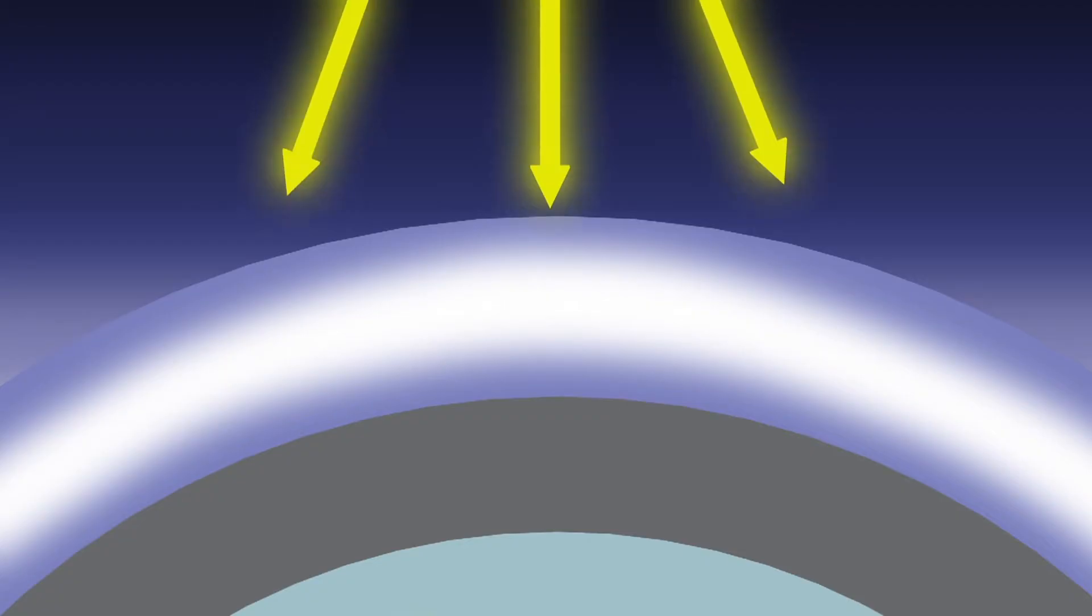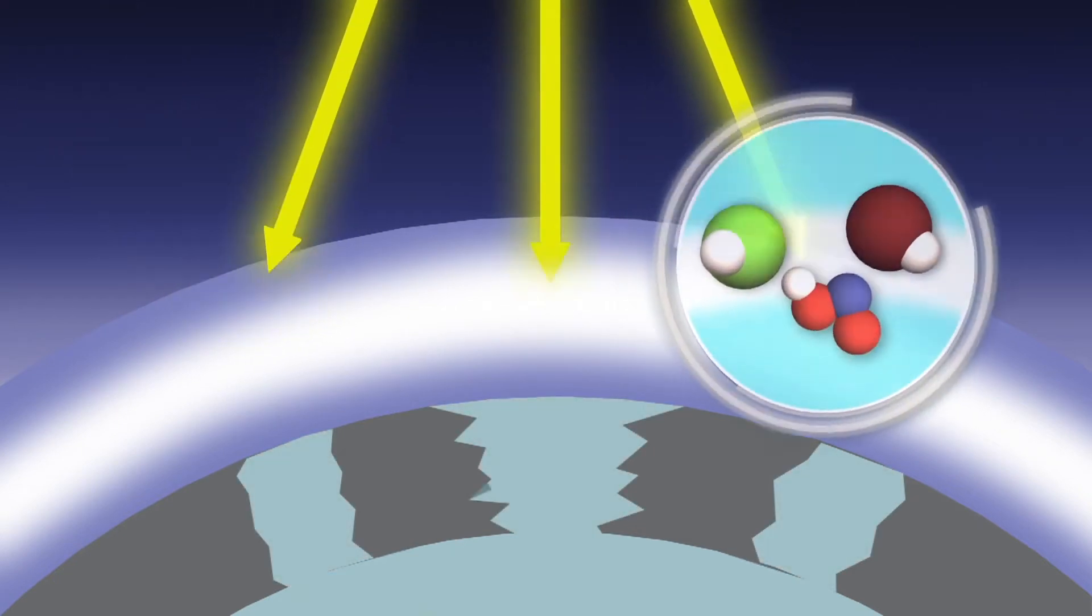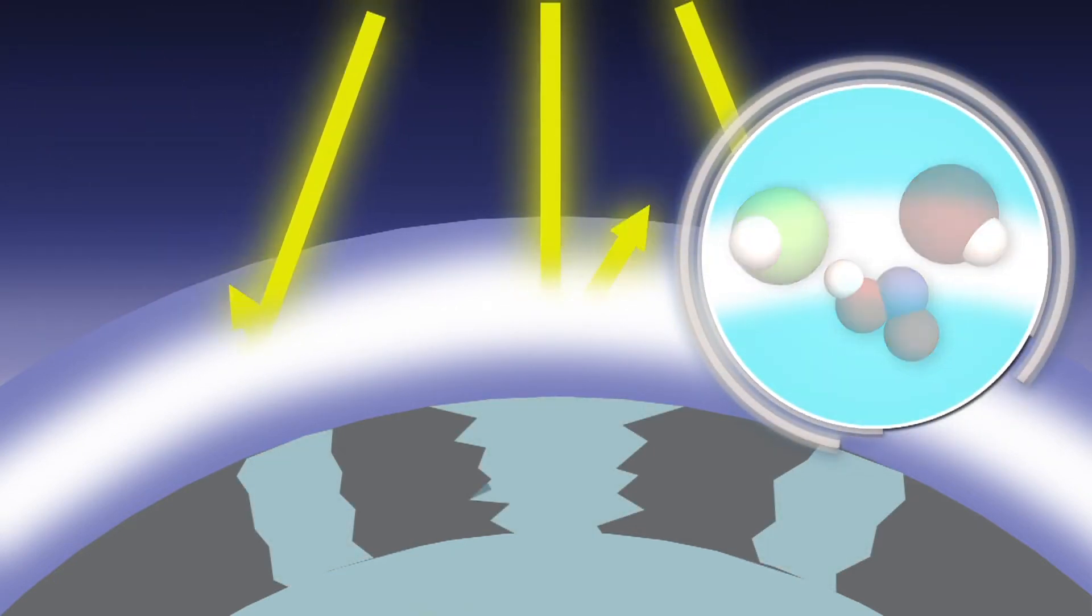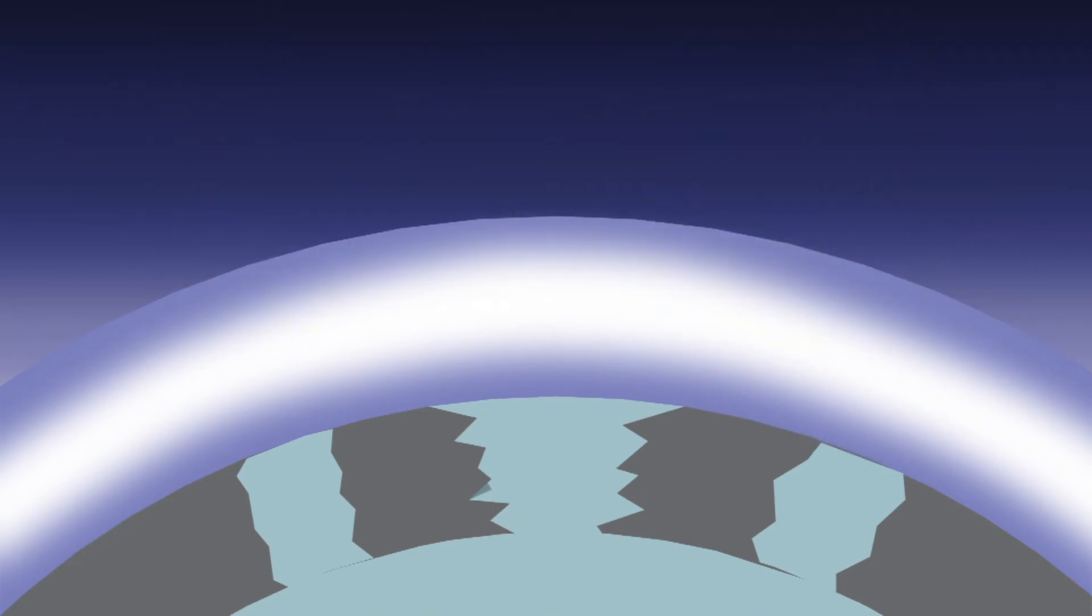The limestone spray will supposedly reflect solar radiation and slow greenhouse gas warming. It will also neutralize the acids that destroy the ozone.